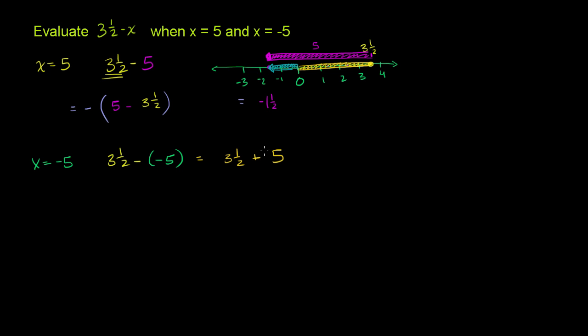3½ plus 5. And this is pretty straightforward. You don't even have to draw a number line here. 3½ plus 5, you could view this as, well, that's just going to be 8½. We just added the whole number part. So you didn't even have to write it as improper fraction. It's 8½. Anyway, hopefully you found that helpful.